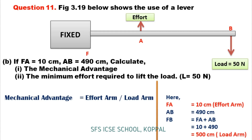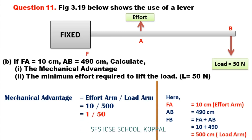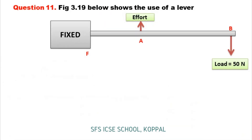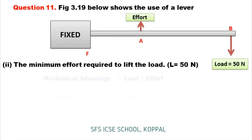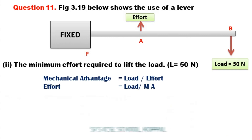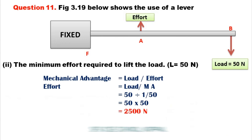So with load arm and effort arm known, we find mechanical advantage equals effort arm divided by load arm: 10 divided by 500, which equals 1/50. For minimum effort: effort equals load divided by mechanical advantage — substituting 50 N divided by 1/50, which equals 50 into 50, giving 2500 N.